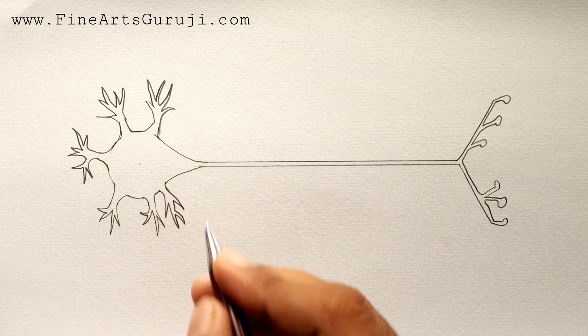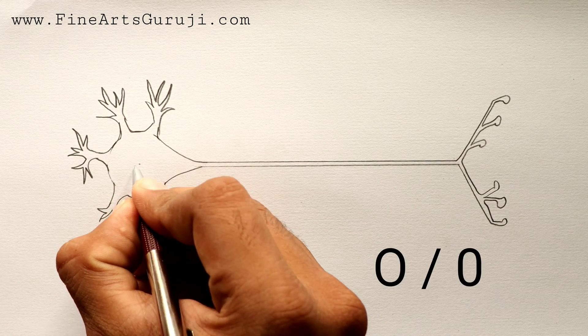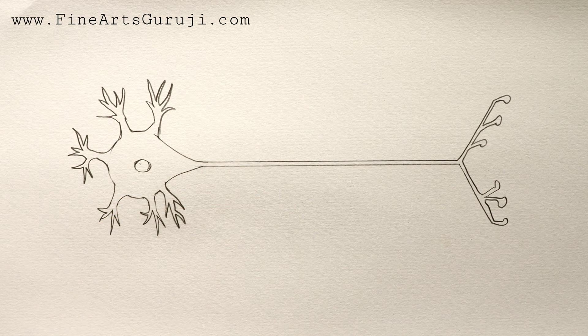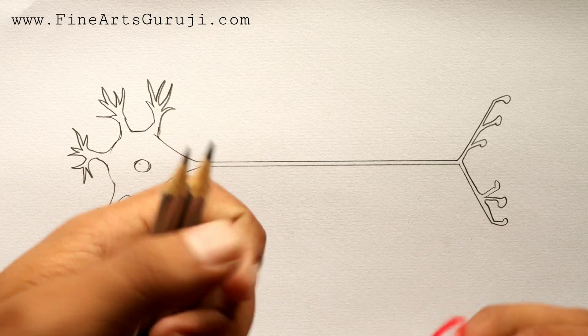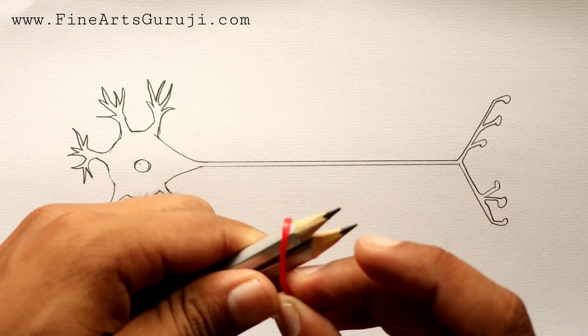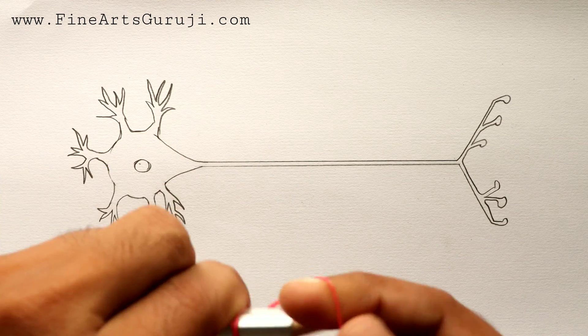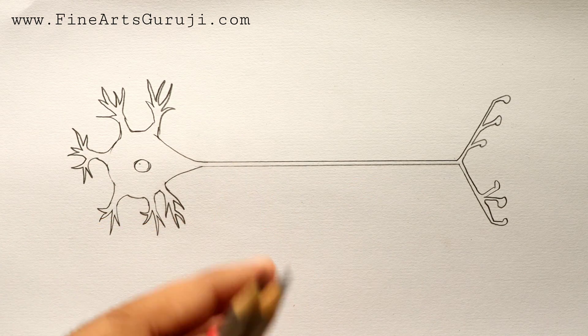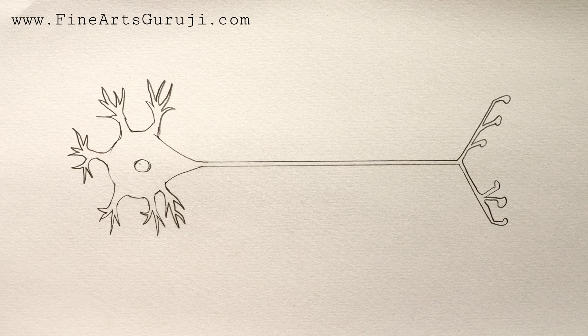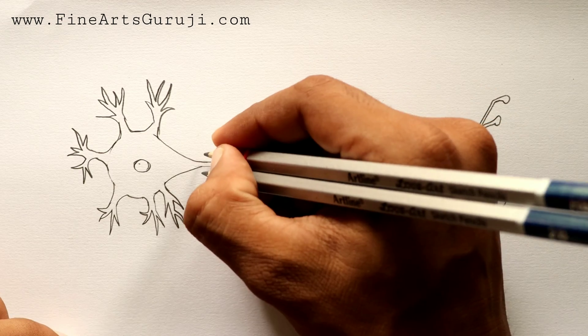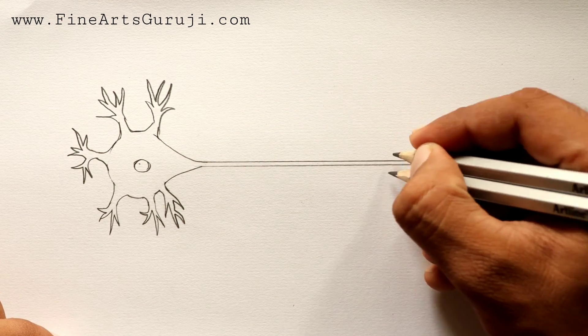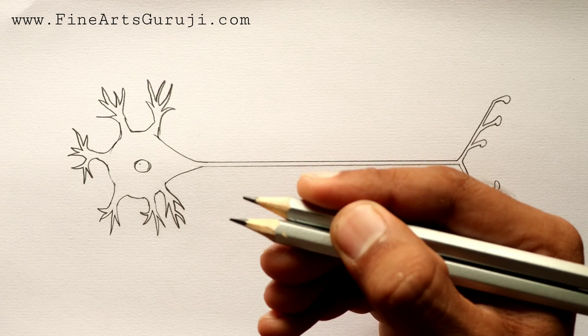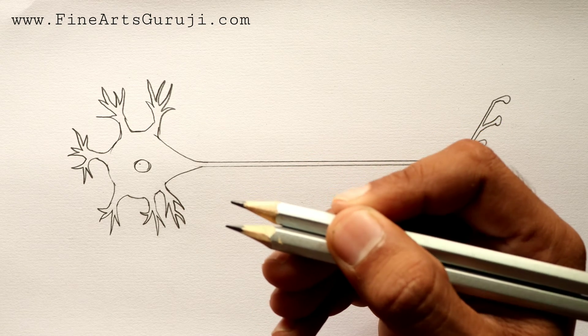After completing this dendrite, we will draw nucleus. Here you can draw a circle. Then we will use double pencil for myelin sheath. You can use rubber if you want. If you fear that in the examination it's not allowed, then I will show you without rubber. It's all depends on you which one is easier.